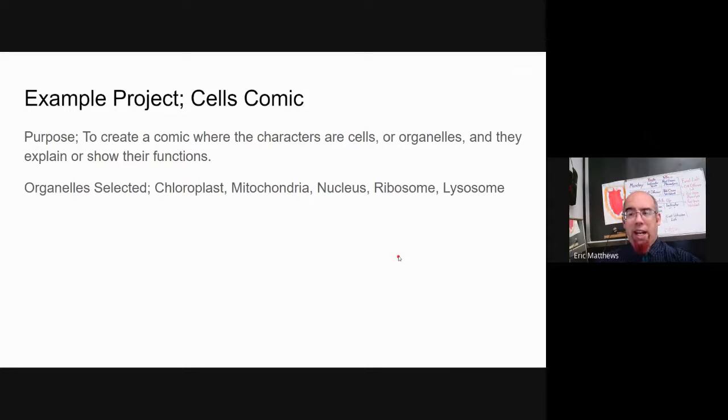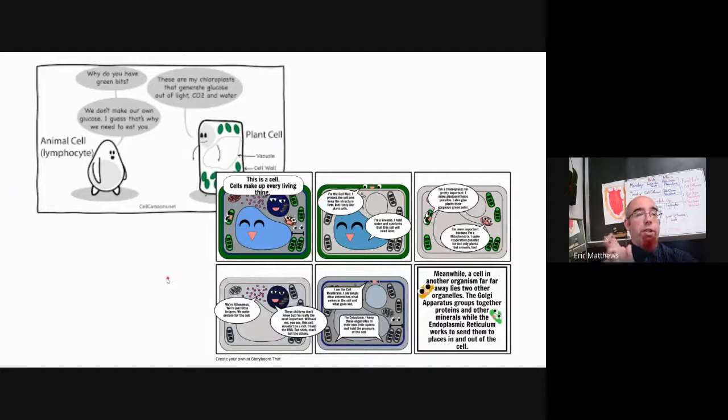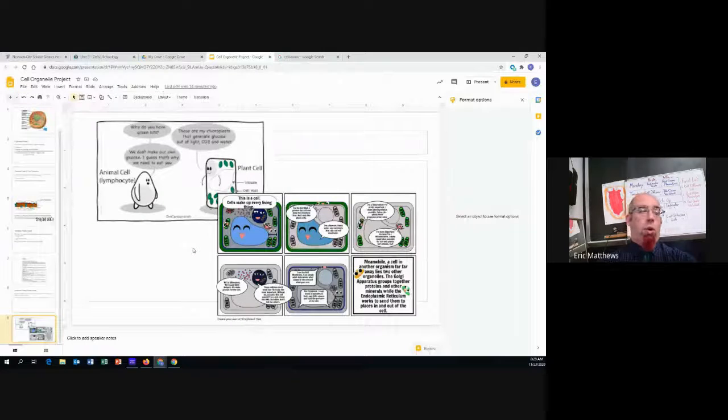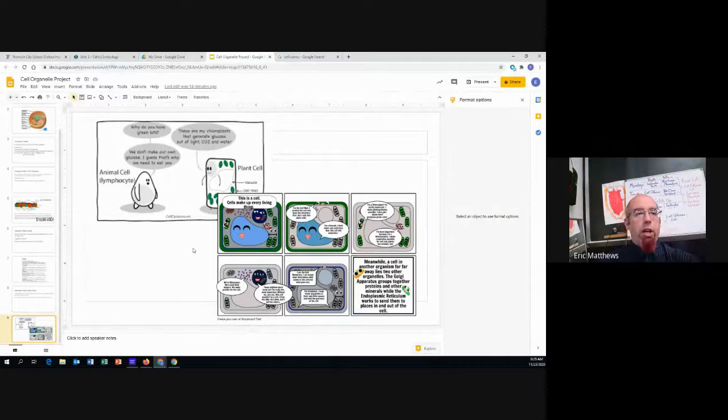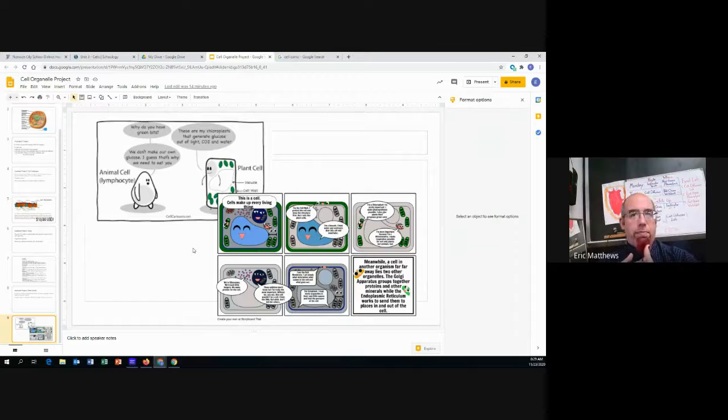Third example. Maybe you're more interested in a comic. Like you want to write a story with little pictures involved. Okay. We could do that to create a comic where the cells are character or the characters are cells or organelles. Maybe they're not the whole thing. And they explain or show their functions. So organelles selected. There's our list. And then you could do a couple different examples of how this might work. There's a lot of flexibility here. So that is our goal. Using some format that you enjoy, create a project that presents five of the nine cell organelles, gives me a picture and explains what they do.